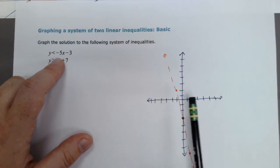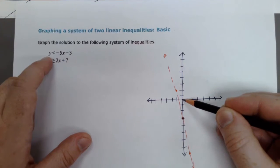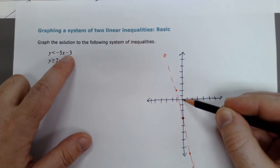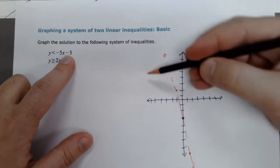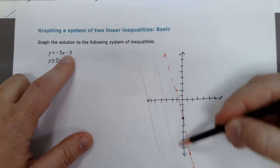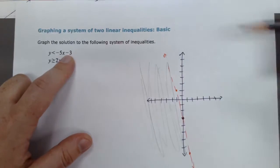So, looking at this one, if I use my test point of 0, 0, is 0 less than negative 3? No, it is not, which means I'm going to shade this part of my line, the left part, because 0, 0 did not work, which means that's the wrong side.